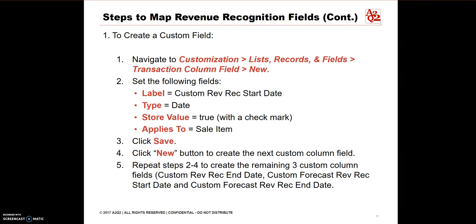For Part 1 of the process, we will do the following steps. Go to Customization, select List Records and Fields, select Transaction Column Field, then click New. Set the following fields for each: Label, which is Custom RevRec Start Date; Type, which is Date; Store Value will be True with a checkmark; and Applies To is the Sales Item. Click Save. Click New to create the next custom column field, and repeat steps 2 through 4 to create the remaining 3 custom fields.